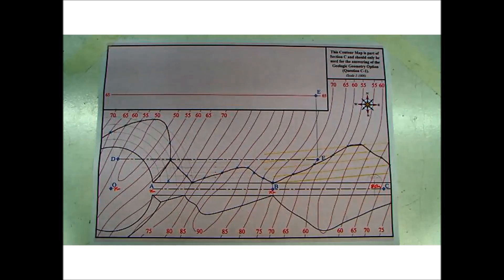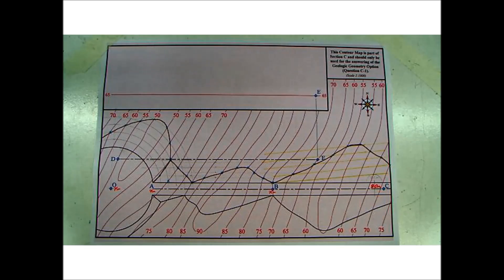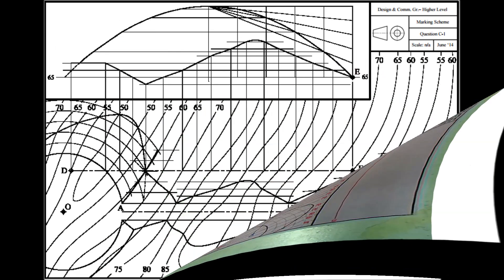So that is part A of the question done. We've marked in the earthworks on the northern side of the fairway and the green for the sections from O, A, B, and C. This isn't a question I do too often so I hope the explanations were as good as they should be. I'll have to leave it here and do parts B and C in the next video. Thank you and good luck.